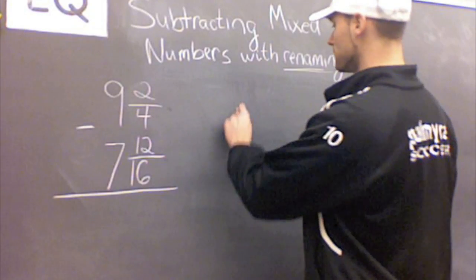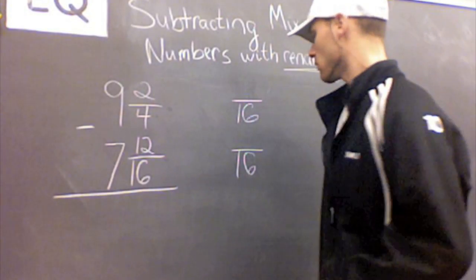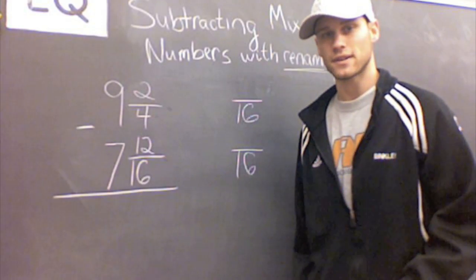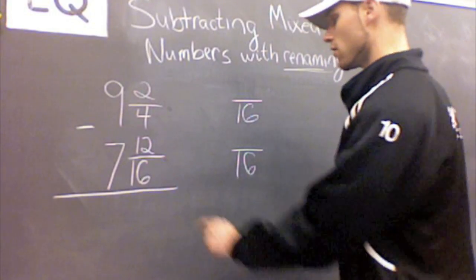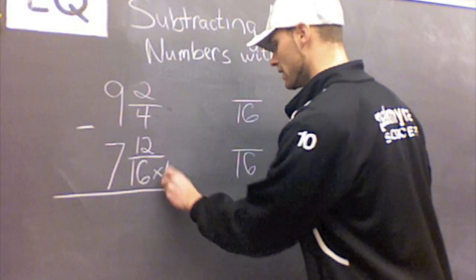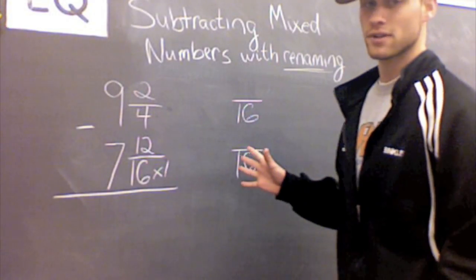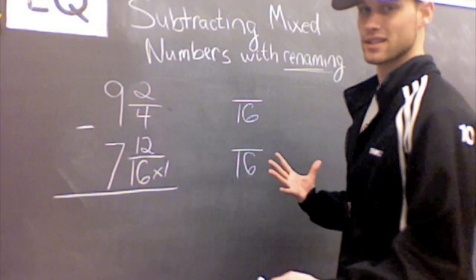I'm going to set it up with my two equivalent fractions with the denominators of 16. So 16 times what gives me 16? Well, times 1. And since we already have our denominator of 16, this is a really easy equivalent fraction. It's just going to stay the same.